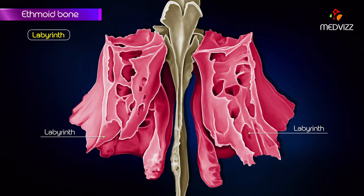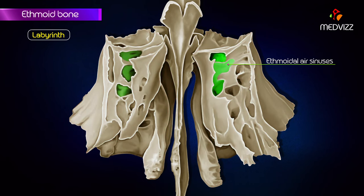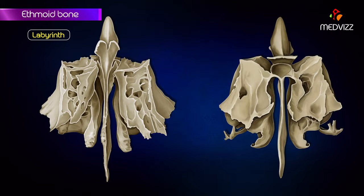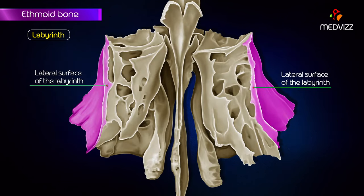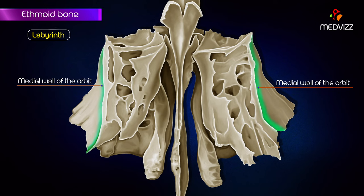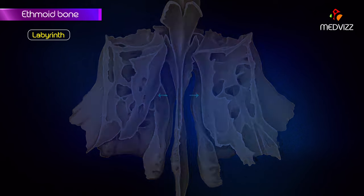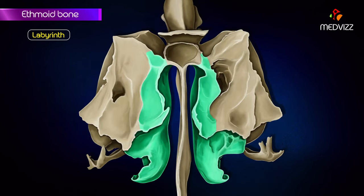The labyrinth consists of several ethmoidal air sinuses that are enclosed within thin plates of bone. The air cells, according to their location, are divided into three groups: anterior, middle, and posterior. The lateral surfaces of the labyrinth form the medial wall of the orbit, and the medial surface forms the lateral wall of the nasal cavity. Two shelf-like plates of bone project from the medial surface and are known as the superior and middle conchae.